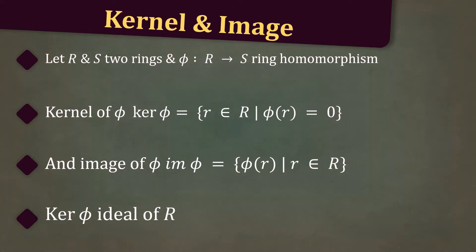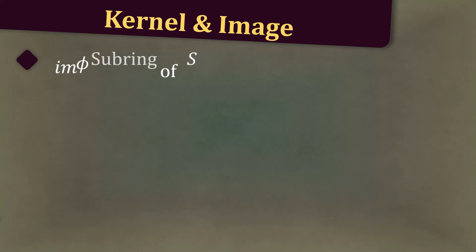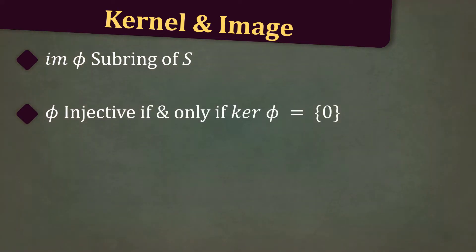Ker phi is an ideal of R. Im phi is a subring of S. Phi is injective if and only if ker phi equals the set containing only zero. Phi is surjective if and only if im phi equals S.